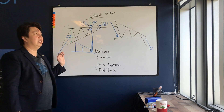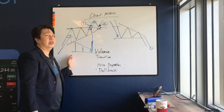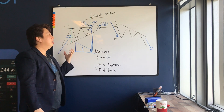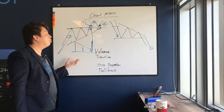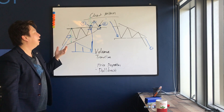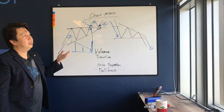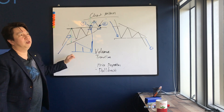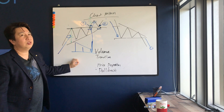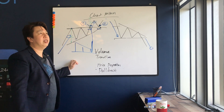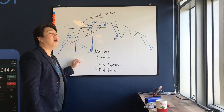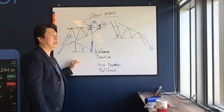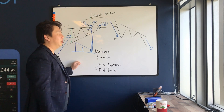The interesting thing about ascending triangles is the hit rate is usually very high — I would say 80 to 90 percent. When you can properly identify an ascending triangle, your hit rate is high. Also, because it's a continuation pattern, it happens more often than a reversal pattern, so this is something you must learn and take note of.